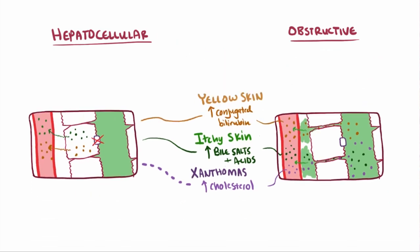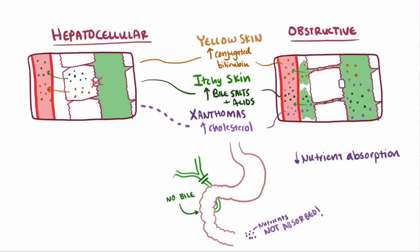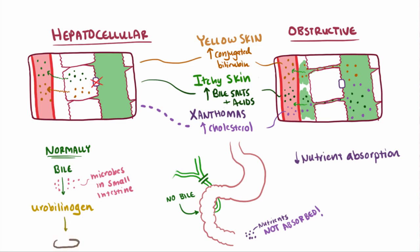So if the bile flow is blocked or reduced, and is being rerouted everywhere except the small intestine where it should be going, you might also expect a reduction in nutrient absorption from the small intestine, since bile usually helps emulsify fats and make them easier to absorb. Also, when bile gets into the small intestine, some of that conjugated bilirubin is converted by microbes in the gut to urobilinogen, which contributes to the brown color in stool. So if less bile and conjugated bilirubin is making it to the gut, the stool will likely take on a much lighter color because it's got less urobilinogen.